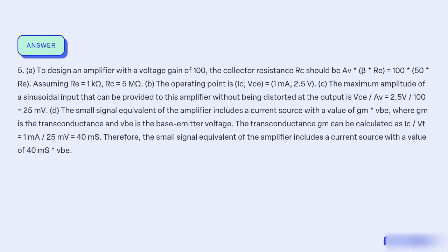The small signal equivalent of the amplifier includes a current source for the value of gm × VBE, where gm is the transconductance and VBE is the base-emitter voltage. The transconductance gm can be calculated as IC / VT equal to 1mA / 25mV equal to 40mS. Therefore, the small signal equivalent of the amplifier includes a current source for the value of 40mS × VBE.